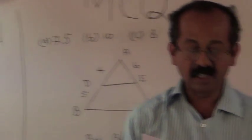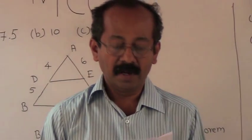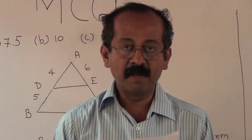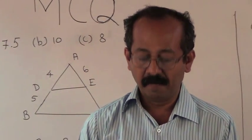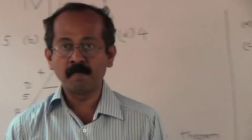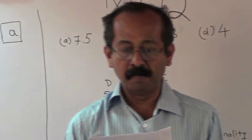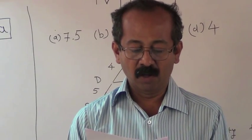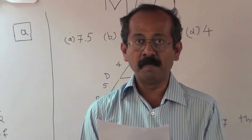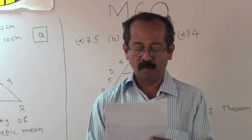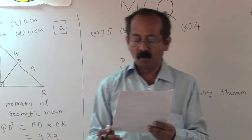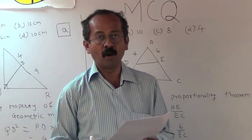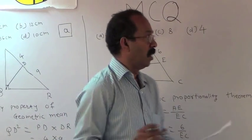Example 3: In triangle ABC, segment DE is parallel to side BC. AD is equal to 4, DB is equal to 5, AE is equal to 6. What is the length of EC?